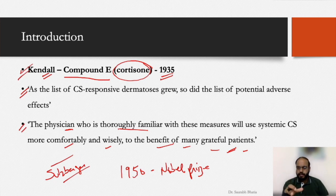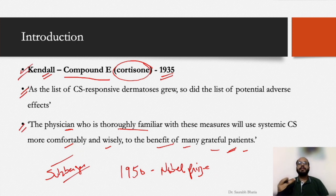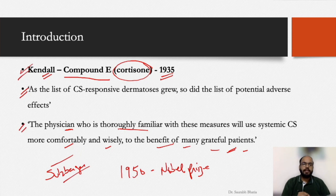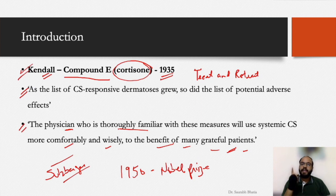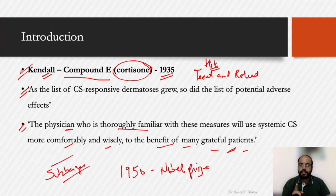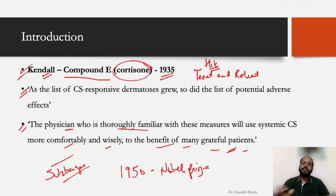Steroids are essentially pan-immunosuppressors — they suppress everything in the immune system. Wolverton mentions a principle called 'treat and retreat': start steroids early in adequate doses, make the patient comfortable, then withdraw and stop steroids. I prefer the term 'hit and retreat' — use adequate doses, no half measures, treat with a good amount of steroid, and try to remove the patient from steroids as quickly as the clinical disease allows, so the patient has fewer side effects in the long run.